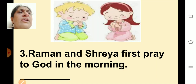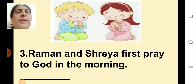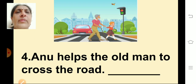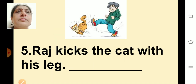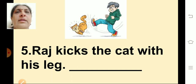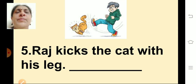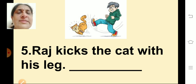Third sentence: Raman and Shriya first pray to God in the morning. Write the answer. Fourth sentence: Anu helps the old man to cross the road. Fifth sentence: Raj kicks the cat with his leg. See the picture and think — whether what the boy is doing is good or bad — and write the answer in the blank.